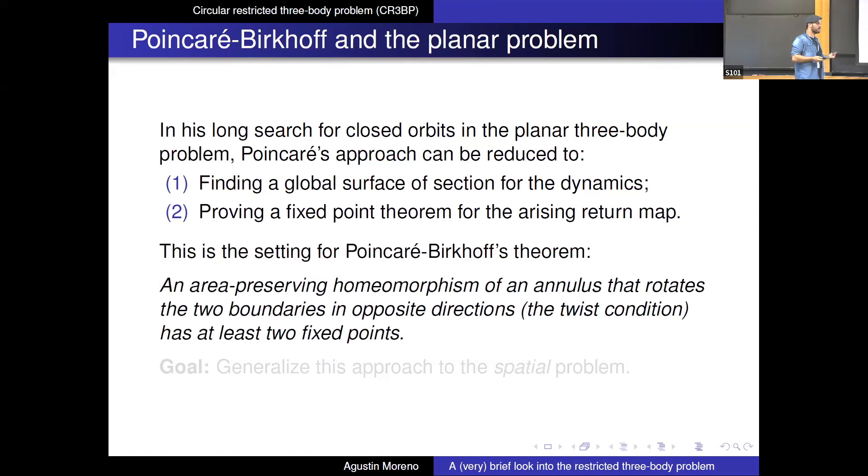So this motivates the second step because by construction, fixed points of the return map correspond to closed orbits or more general periodic points. So if you can put a fixed point, then you're in business because you found orbits. So this is, of course, the setting for a very famous term, the Poinque de Burkhoff theorem, which says that an error preserving homeomorphism of the annulus that rotates the two binary components in opposite directions is classically called the twist condition has at least two fixed points.